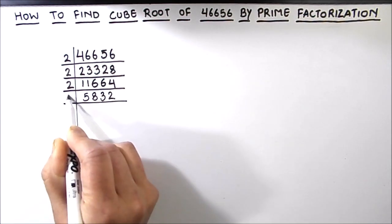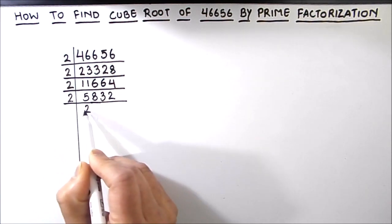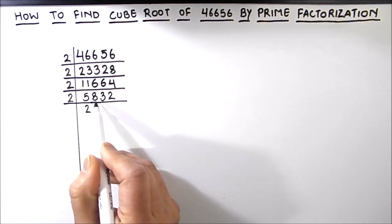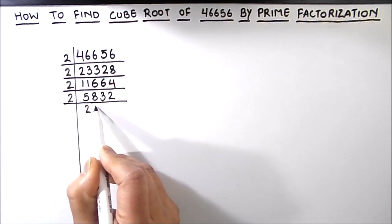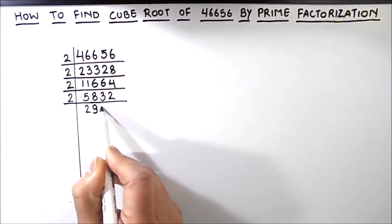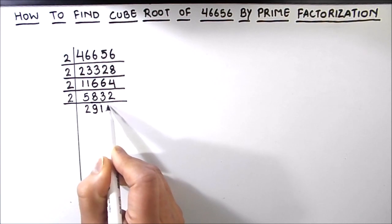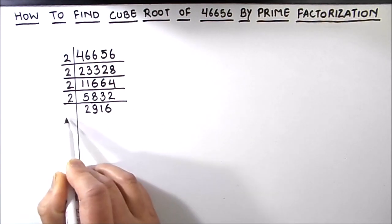Again we can divide by 2. 2 times 2 is 4, 1 is remainder, then this becomes 18, 2 times 9 is 18, 2 times 1 is 2, 1 is remainder, this becomes 12, 2 times 6 is 12.